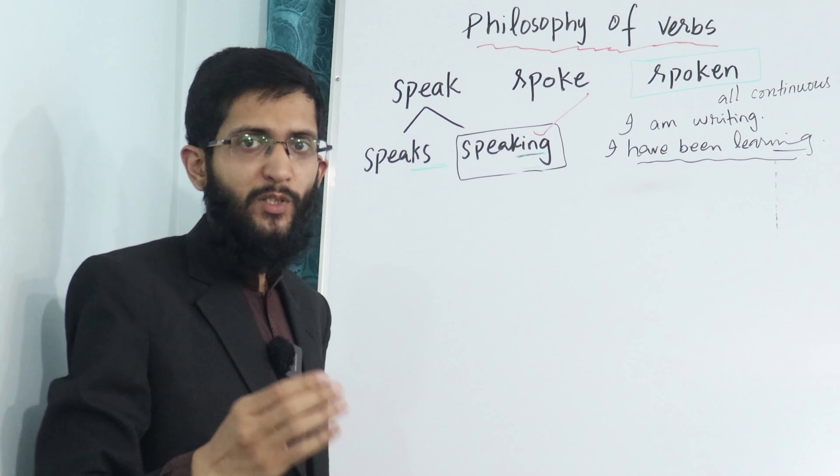You have learned the third form with all perfect tenses and with all passive structures. The -ing form with all continuous tenses like I am going, I am speaking, I was speaking, I will be speaking, I have been speaking, I had been speaking, I will have been speaking. These six important structures.